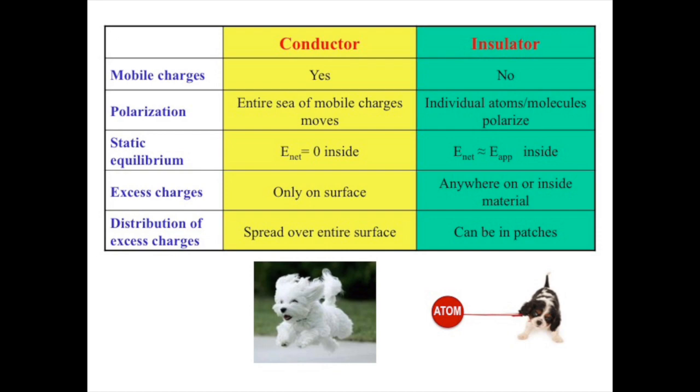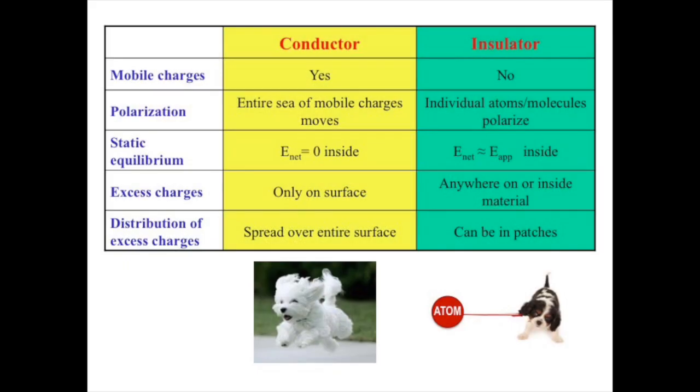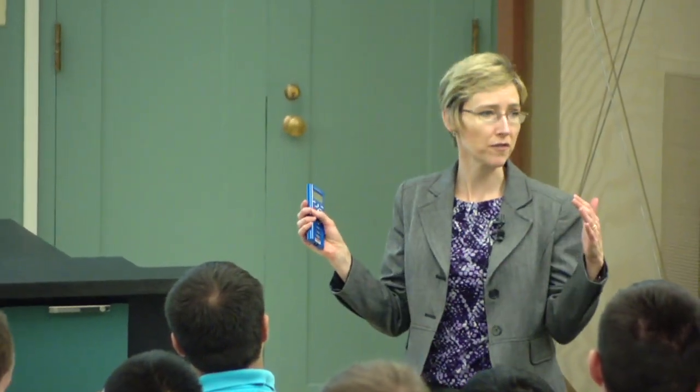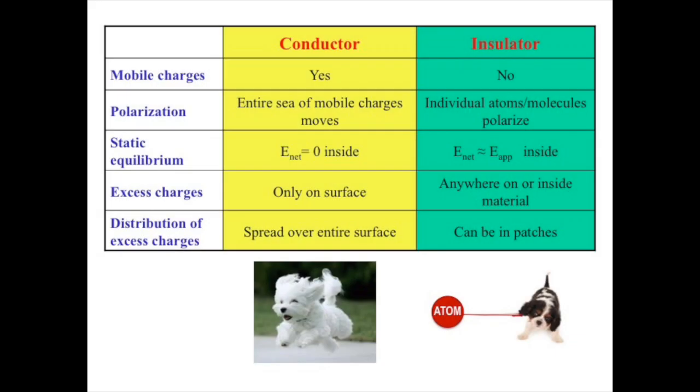Here's a summary comparing conductors and insulators. Conductors have mobile charges free to move; insulators don't. In a conductor, the whole electron sea shifts; in an insulator, each individual atom has a slight polarization. In static equilibrium, the net electric field inside a conductor is zero, while inside an insulator there's still a net applied field. Excess charges on a conductor can only be on the surface, while in an insulator they can be anywhere. That's it for today — see you on Wednesday.